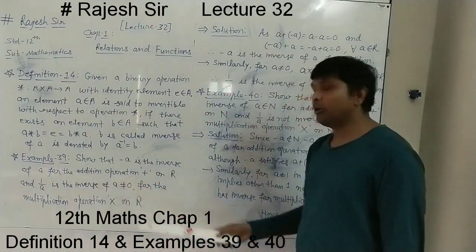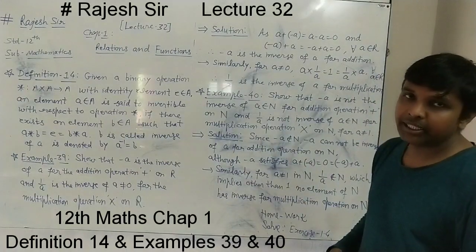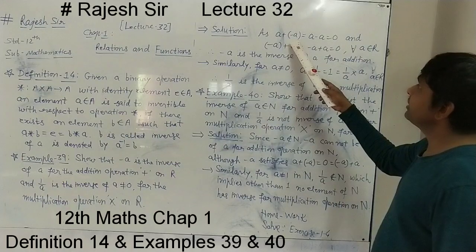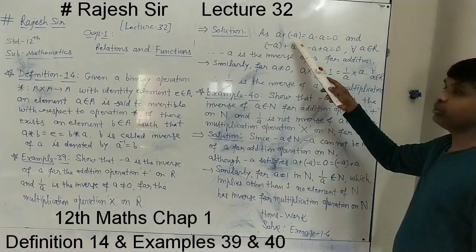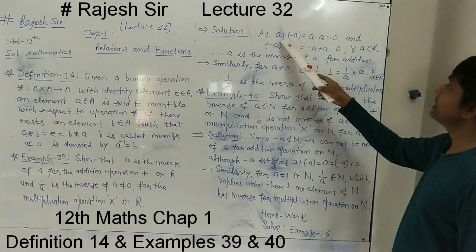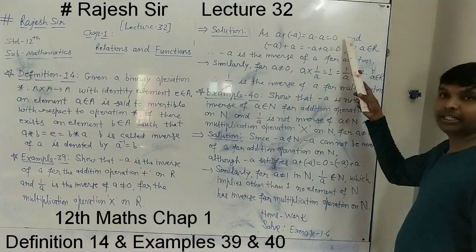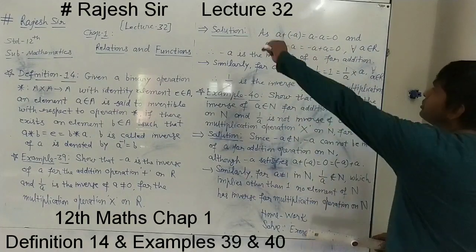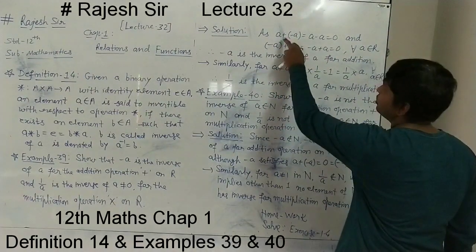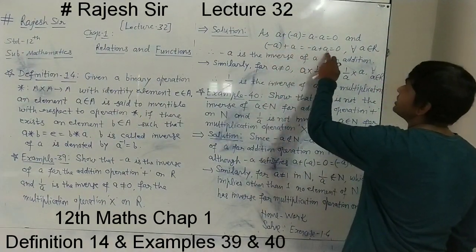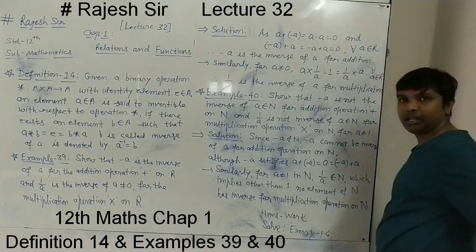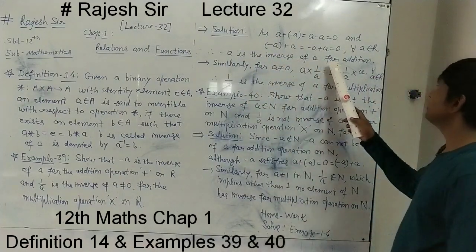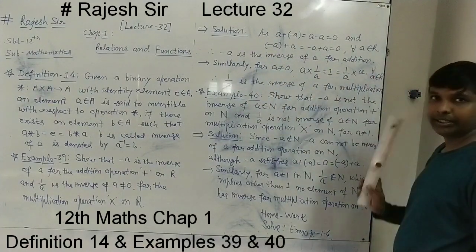For addition operation, the identity element is 0. So A plus (minus A) equals 0, which is the identity element E. And the reverse: (minus A) plus A also equals 0. Therefore, minus A is the inverse of A for addition.